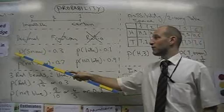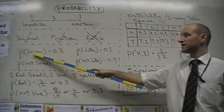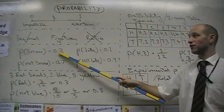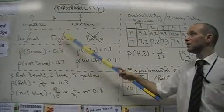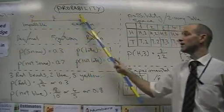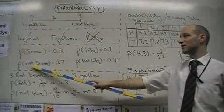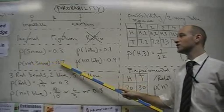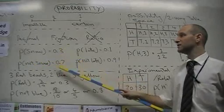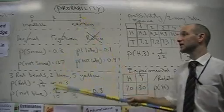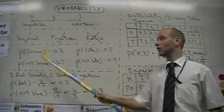Let's look at some probability questions. If the probability of it snowing today is 0.3, using this scale here, we know that the probability of it not snowing is 0.7, because these must add up to 1, because it's certain it will either snow or not.